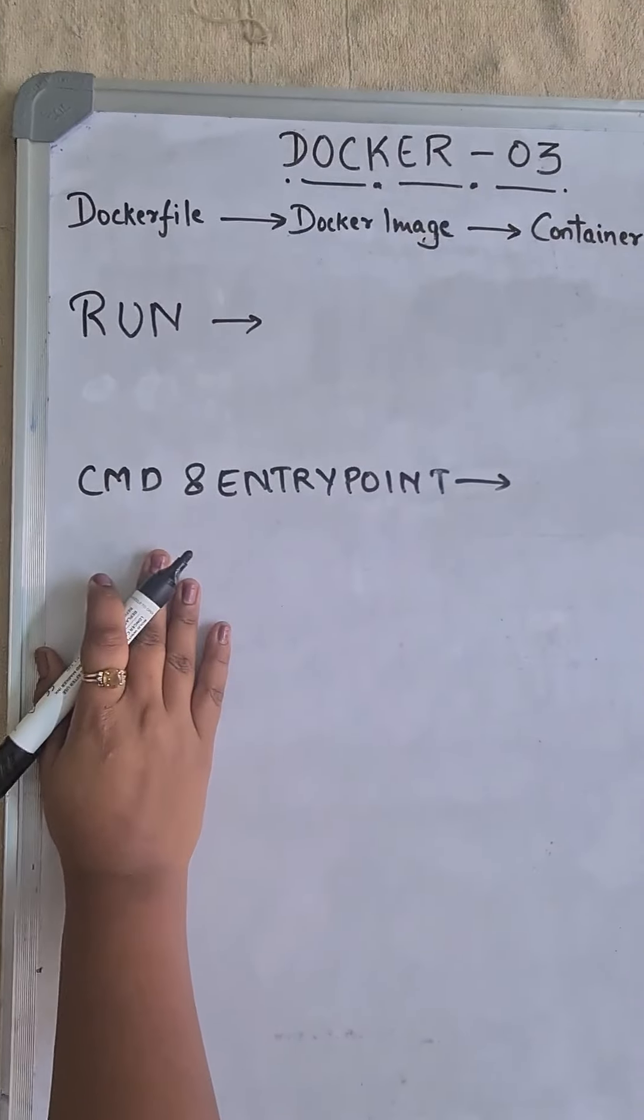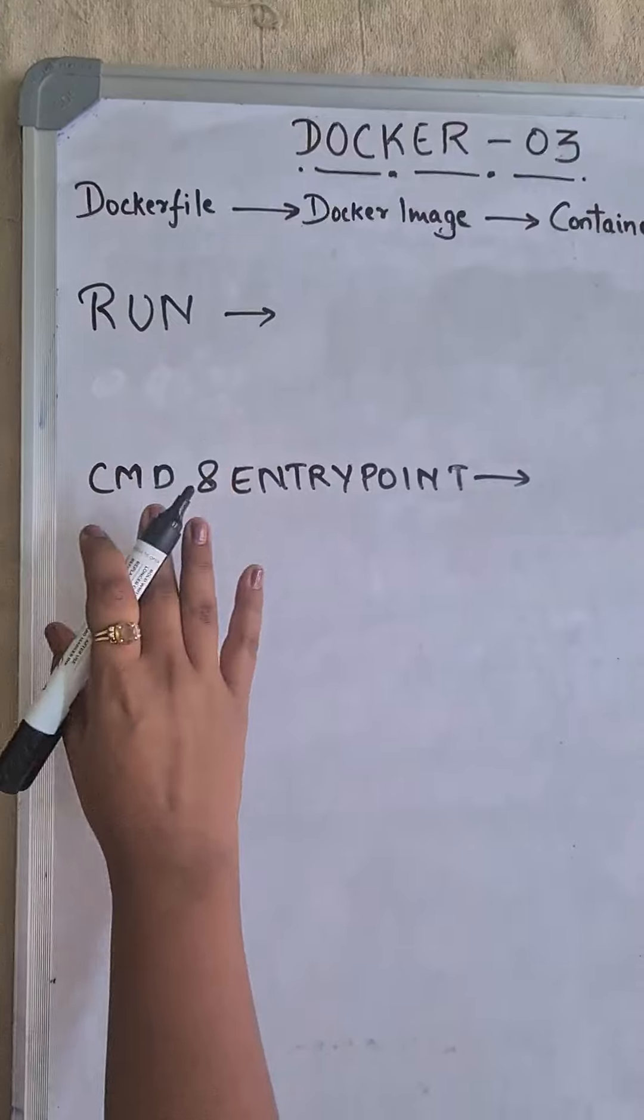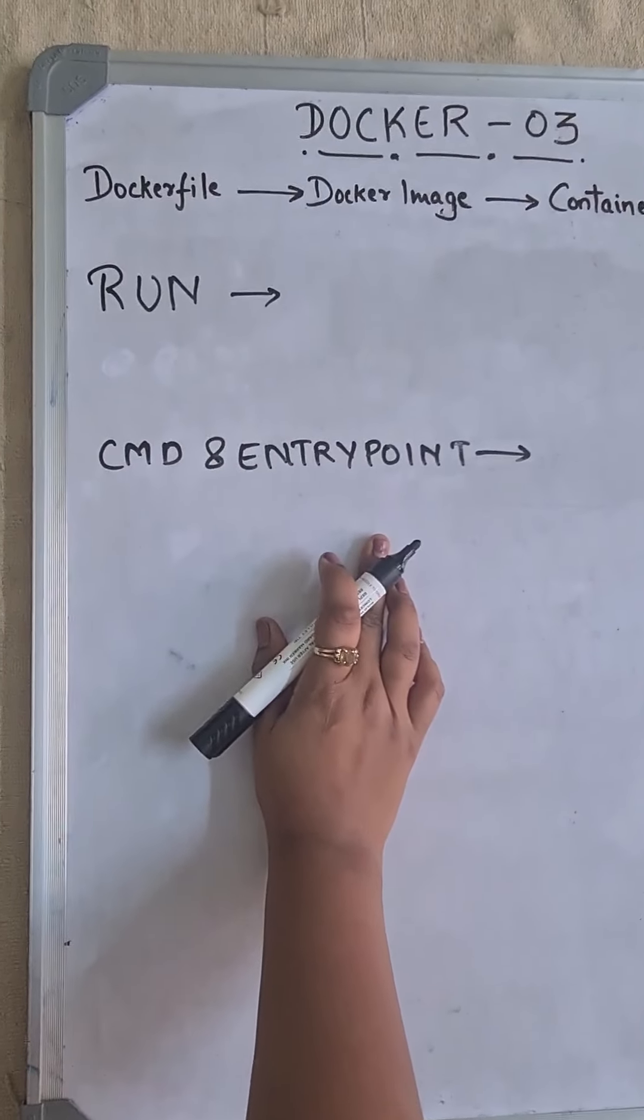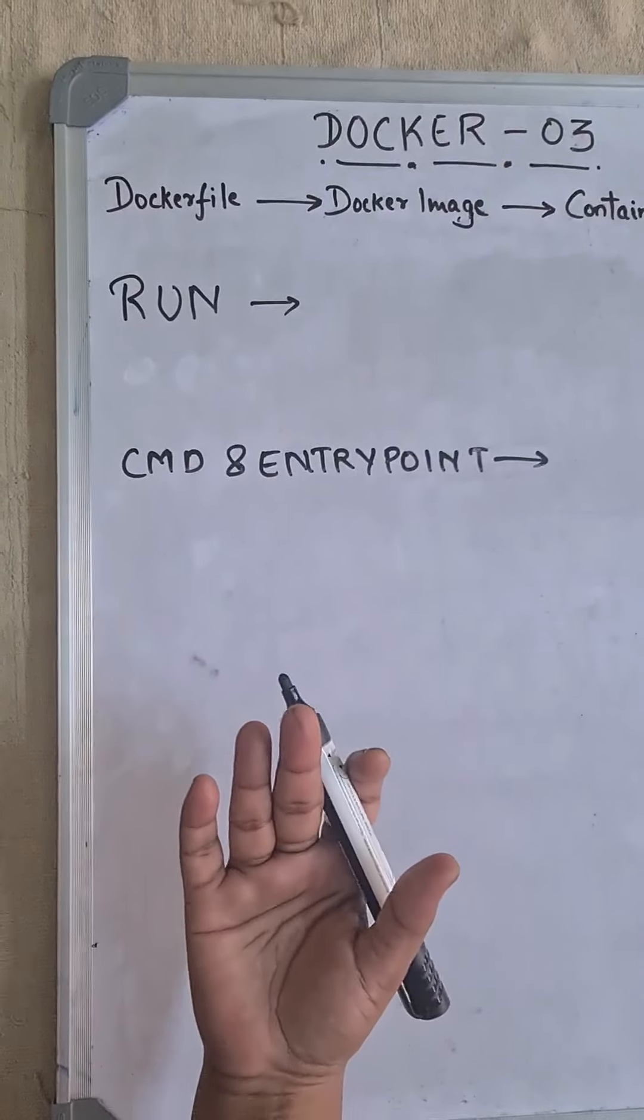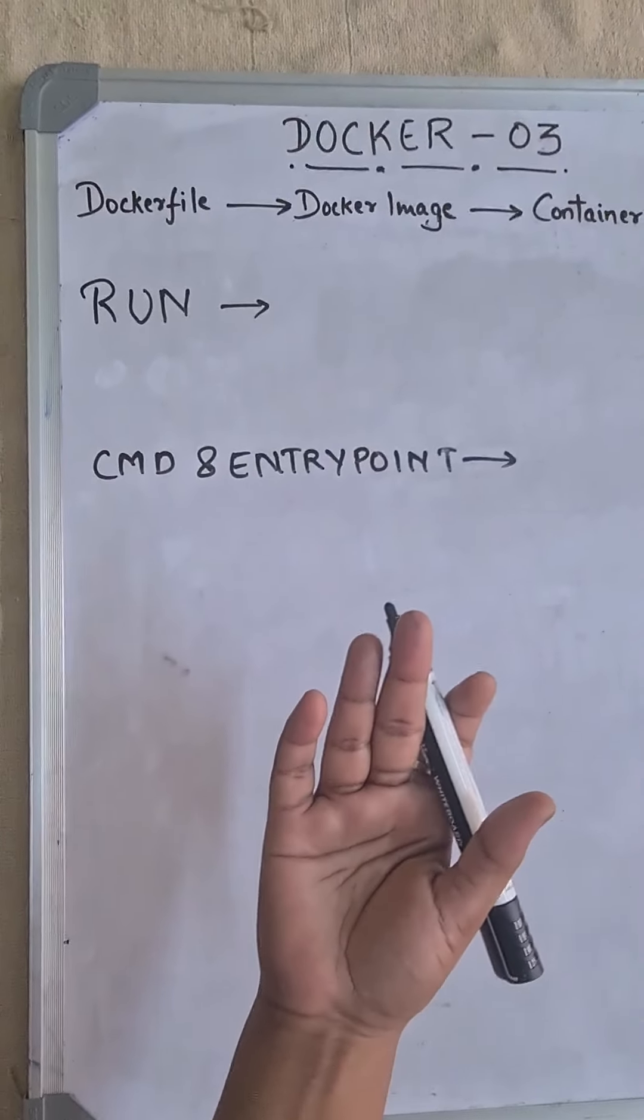We usually get confused while using RUN, CMD, and ENTRYPOINT in our Dockerfile. The reason is all these three commands are interchangeably used when you're writing a Dockerfile and creating a Docker image out of it.